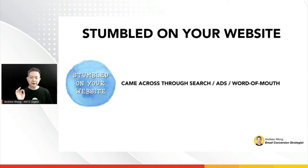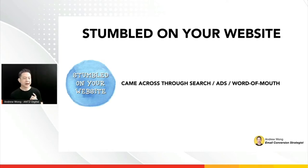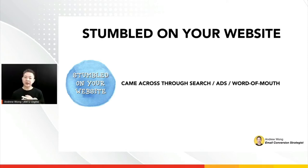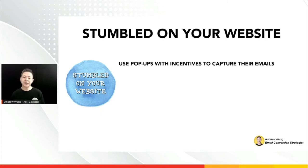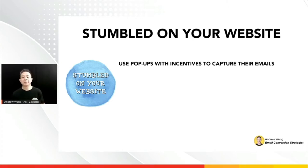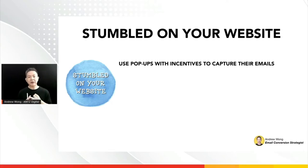People who stumble on your website come in through search, ads, or word of mouth. They don't know much about you, but maybe somebody recommended you or your website popped up through SEO. If they're not on your list, you want to use pop-ups — either exit pop-ups or surprise pop-ups — with an incentive to capture their emails. That's the first interaction.